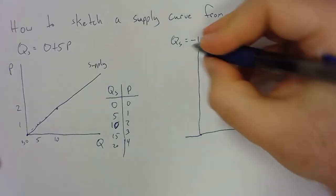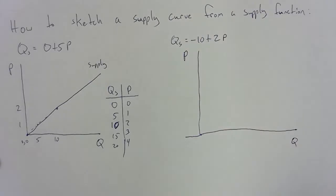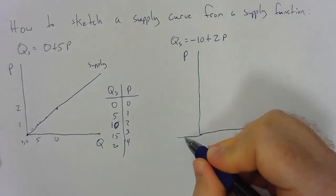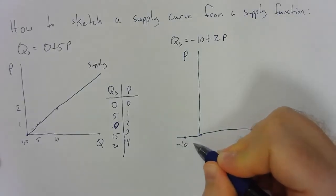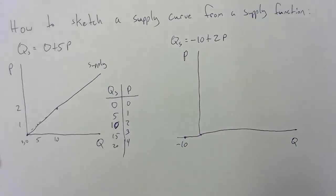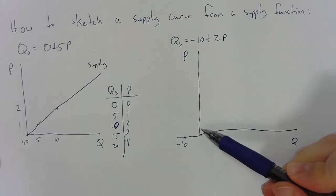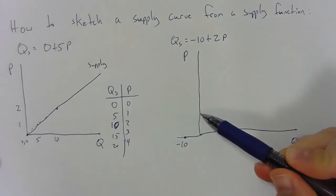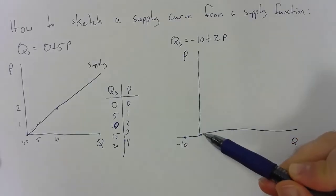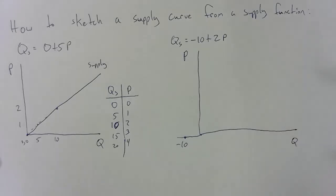So what that is going to do is at a price of zero, you're actually going to have a negative ten being supplied. And so what this does is it allows for the supply curve to require some price that is much greater than some infinitely small amount greater than zero in order to start supplying.